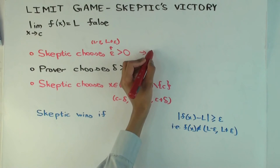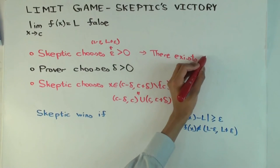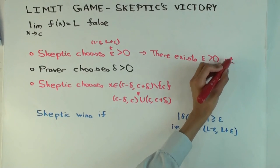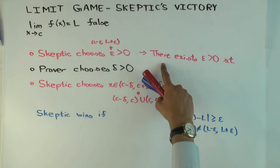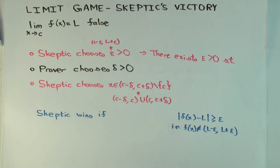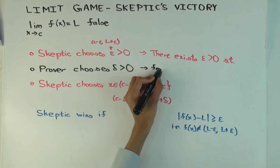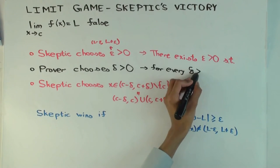There exists an epsilon greater than zero, such that... When is the skeptic's move? The skeptic just says there exists, right? Because the skeptic can pick. If anything works, the skeptic can pick that. But when it's a prover's move, the skeptic has no control. So this should read for every delta greater than zero.